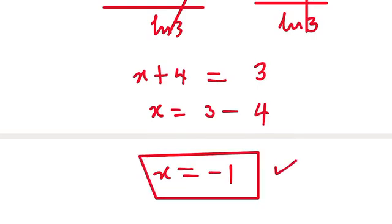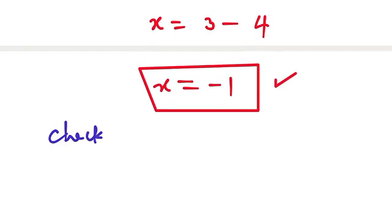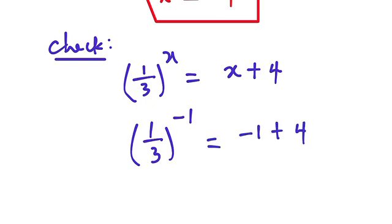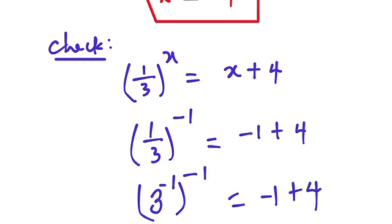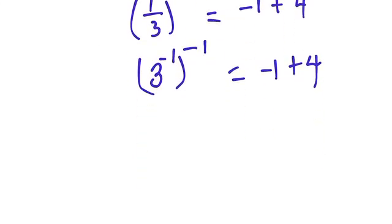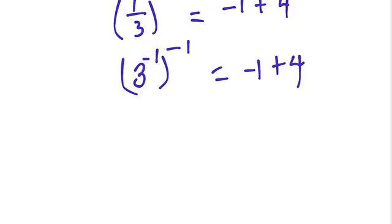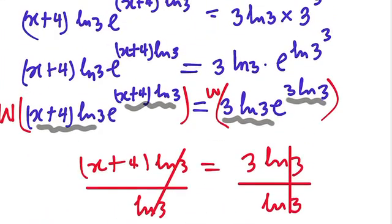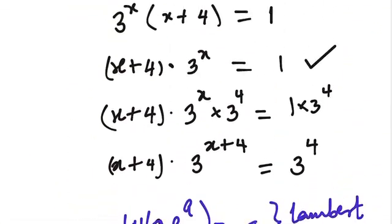So we have our solution x equals negative 1. Now let's check whether this is right. We have the question: 1 over 3 to the power of x equals x plus 4. Putting x equals negative 1, we have 1 over 3 to the power of negative 1, which equals 3, and on the right side negative 1 plus 4 equals 3. So we can see that x equals negative 1 satisfies the equation. That's the end of the class. If you enjoyed it, kindly share with your friends so they can learn from this. Thank you so much for watching.